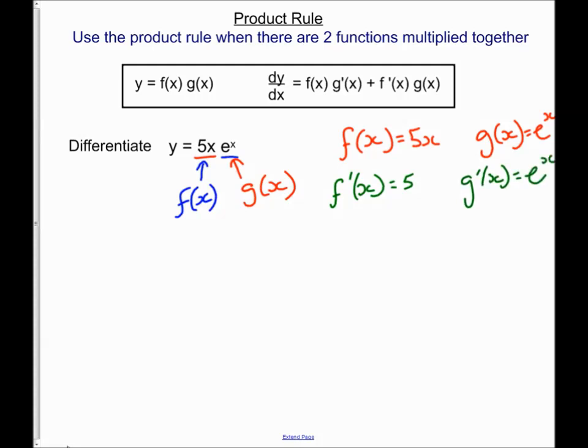Then to work out my derivative I need to do f of x times g dash of x. So I'm going to multiply my diagonals, that gives me 5x e to the x. And f dash of x times g of x, I'm going to multiply my diagonals this way, which gives me plus 5 e to the power x.